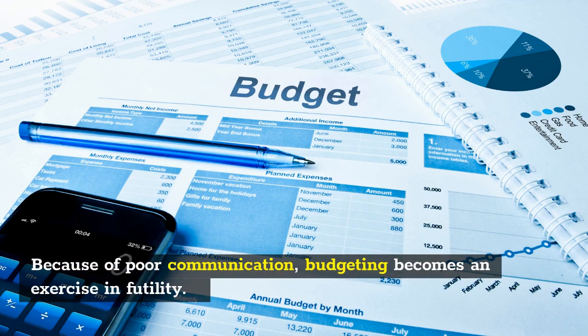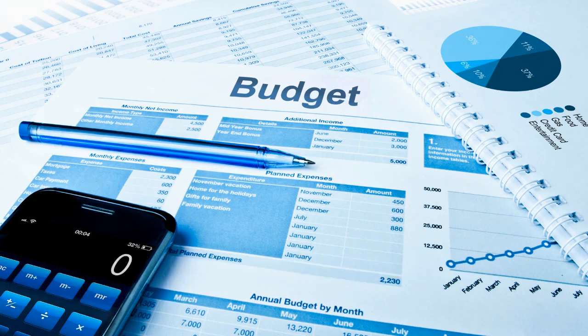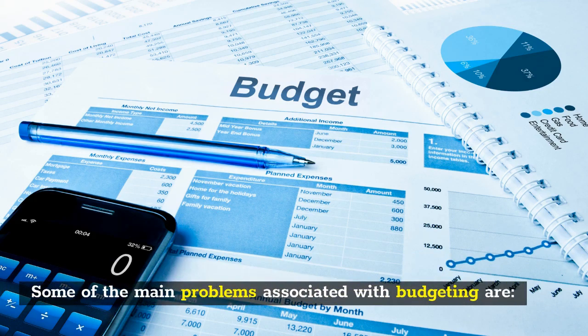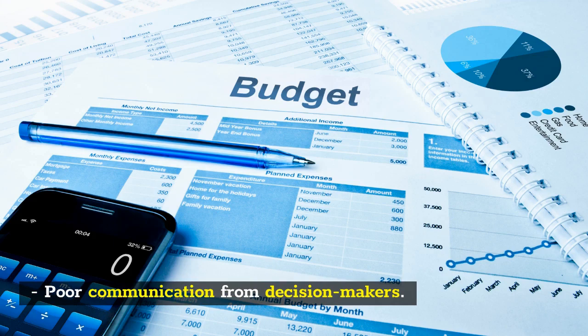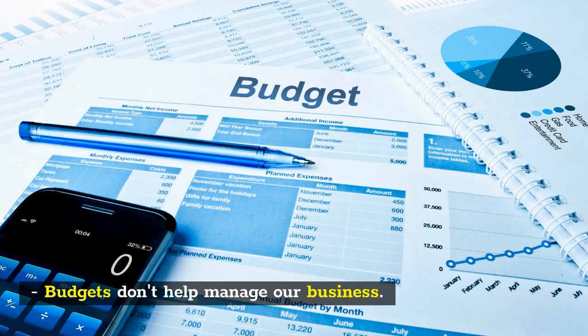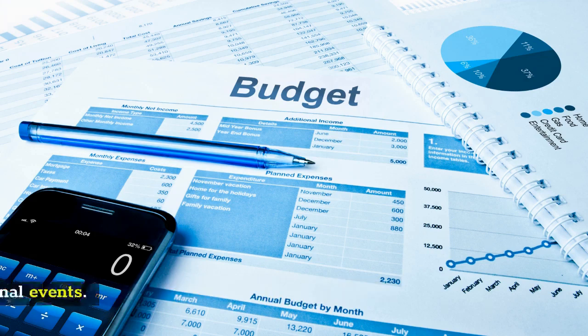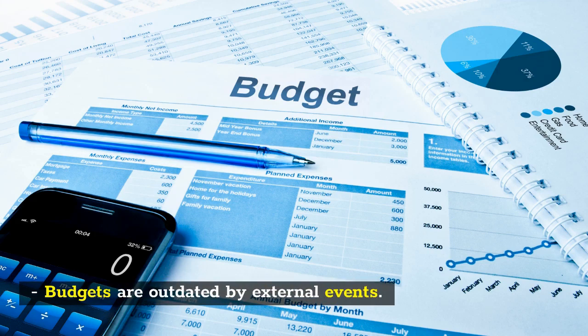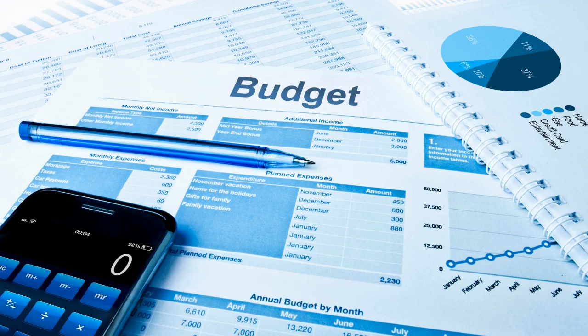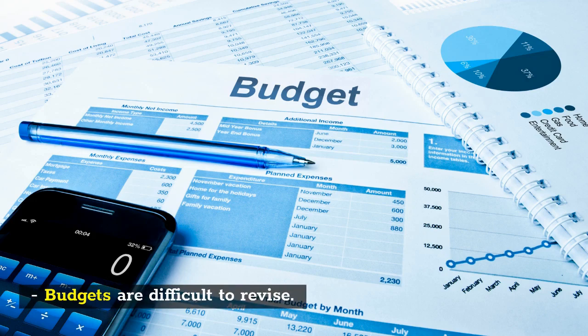Because of poor communication, budgeting becomes an exercise in futility. Some of the main problems associated with budgeting are: poor communication from decision-makers, too many people involved in the process, budgets that don't help manage the business, budgets that are outdated by external events, and budgets that are difficult to revise.